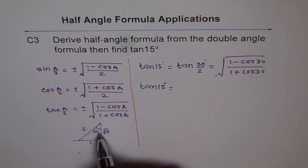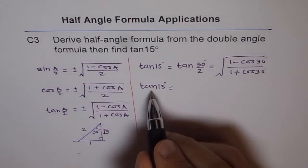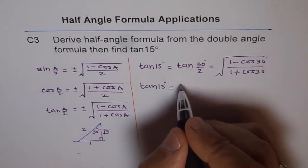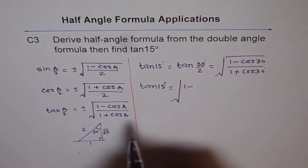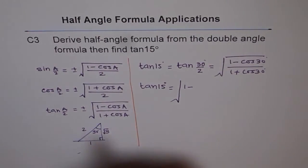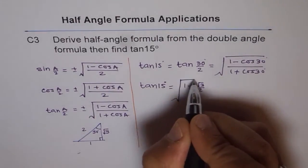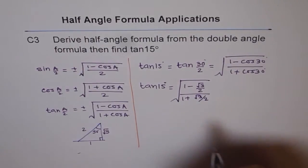So, what is cos of 30 degrees? Cos of 30 degrees is square root of 3 over 2. So, let us put those values. Since it is in quadrant 1, all trigonometric ratios are positive. So, we will take positive value. So, we get 1 minus, instead of cos 30, I am writing square root of 3 over 2, divide by 1 plus square root of 3 over 2.